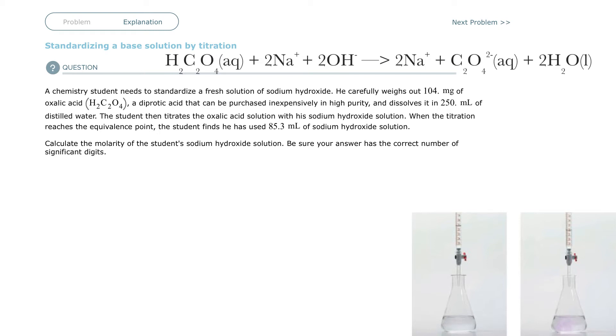All right, so this is actually pretty simple. The math is nothing. You can probably do it. So we're going to say, let's see, he carefully weighs out 104 milligrams of oxalic acid. So we need to know how many moles that is. And he dissolves it in 250 milliliters of water. And then he titrates it, and when the titration reaches equivalence point, the student finds that he has used 85.3 mils of sodium hydroxide solution.